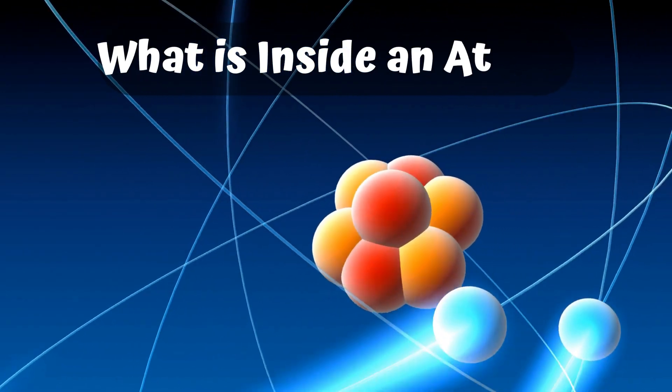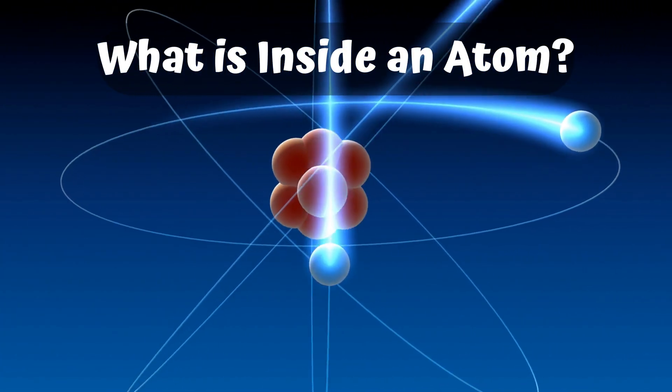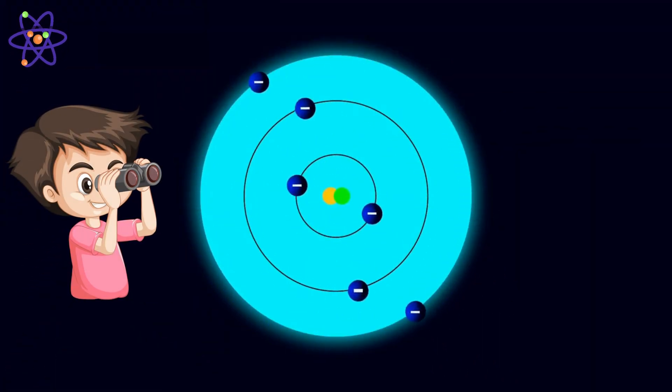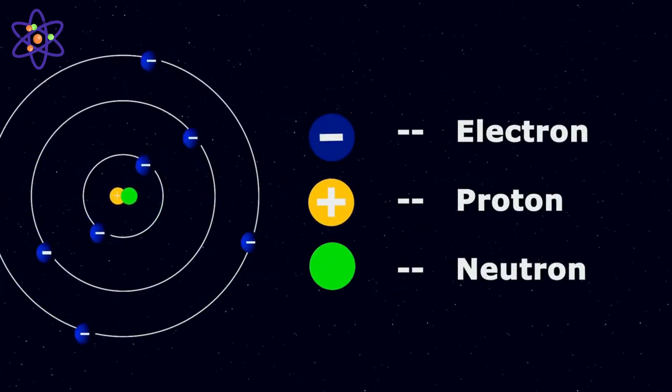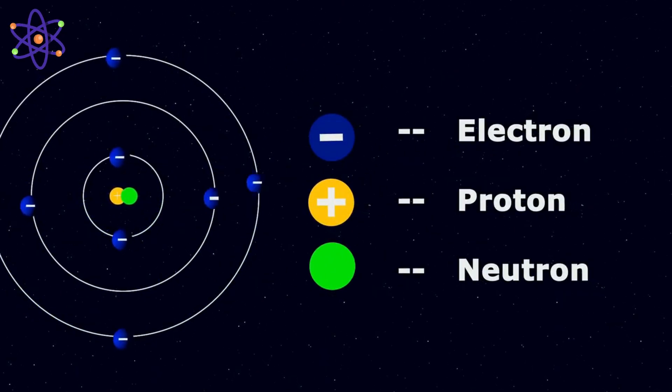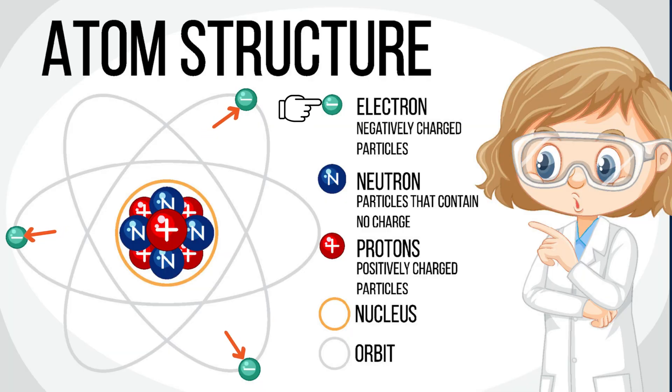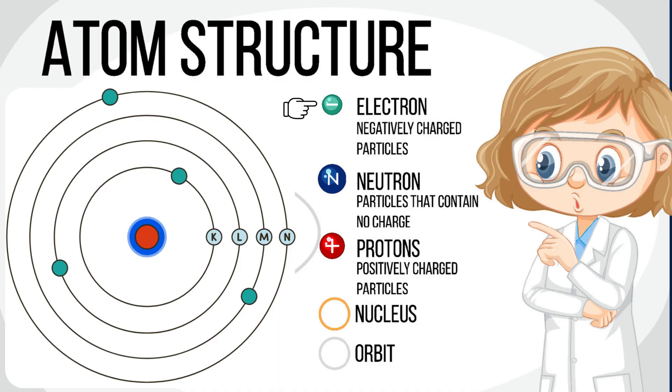Part 2. What is inside an atom? Let's shrink down and look inside an atom. Atoms have three main parts. Electron, proton, and neutron. Electrons. These are super speedy and have a negative charge. They zip around the center of the atom like planets around the sun.